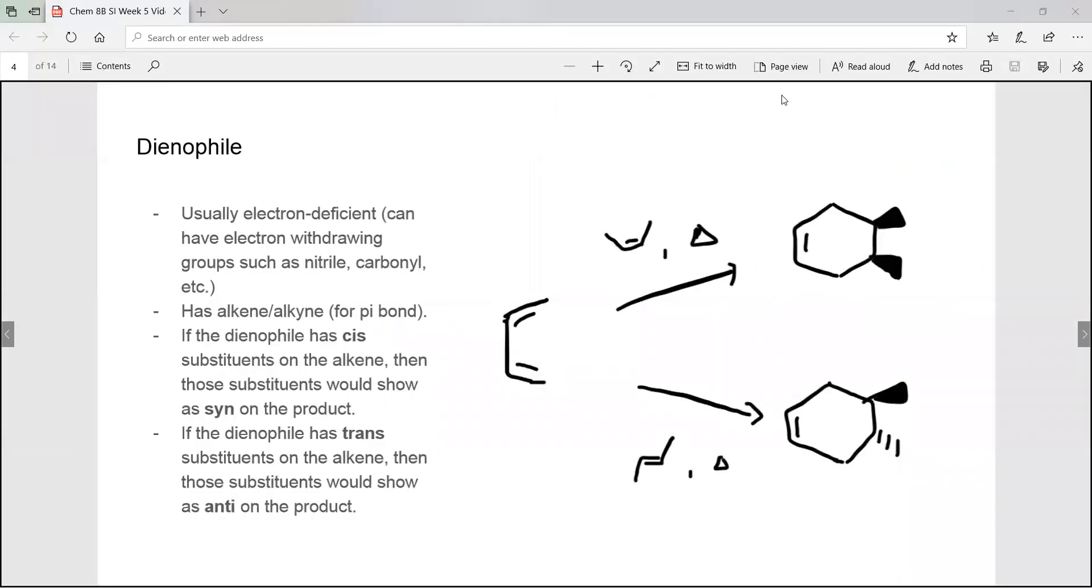The dienophile is usually electron deficient and has alkene or alkyne as some kind of pi bond. If the dienophile has substituents in alkene, then those substituents will show as syn on the product. If they're trans, then they will show up as anti.